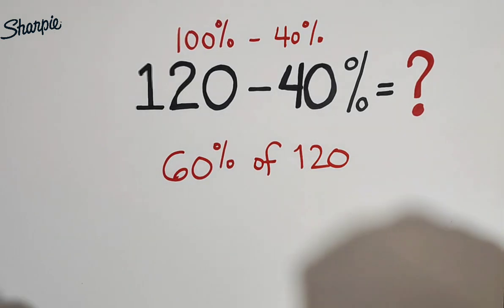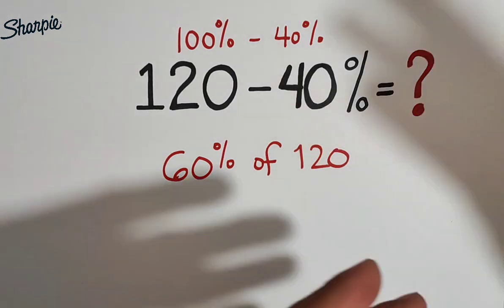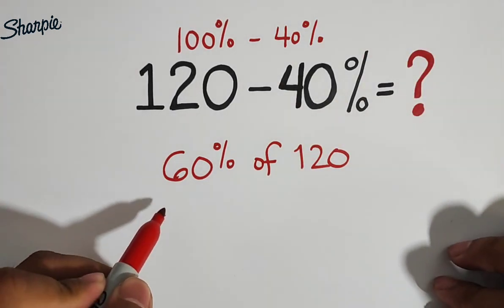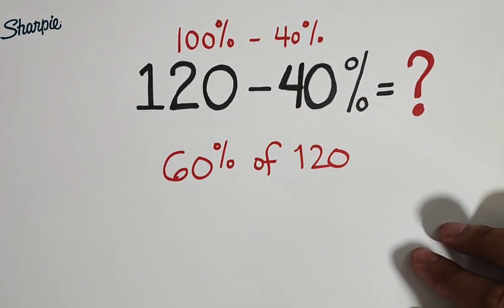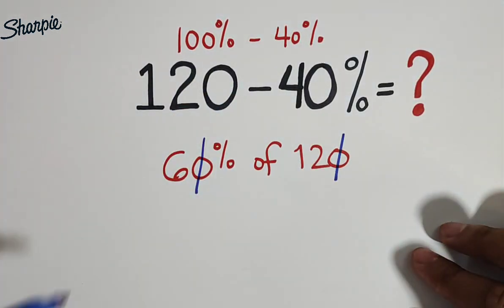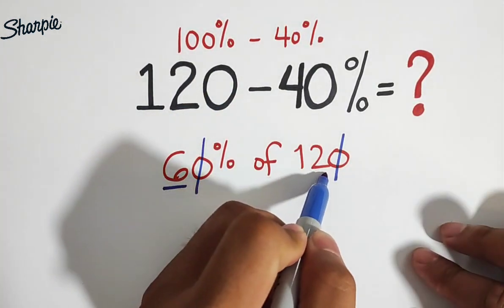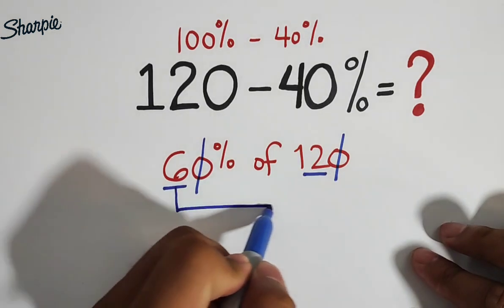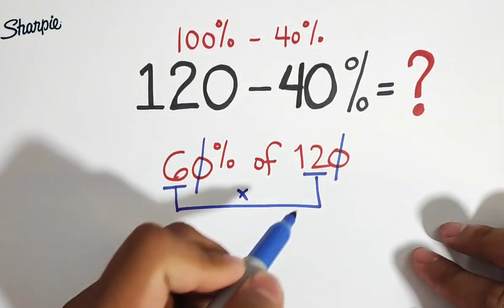And knowing that we have taught you, we have a shortcut on how to get the percentage of a number when it comes to multiples of 10. So here what we need to do is we will cross out one zero and another zero. So what we need to do is to multiply 6 and 12.